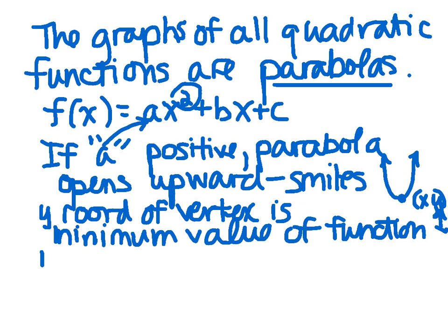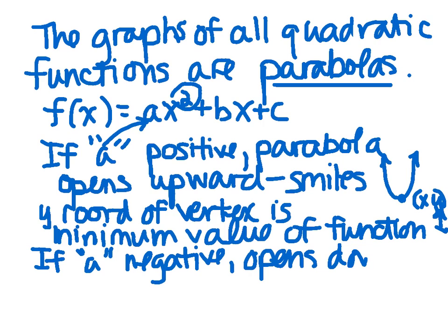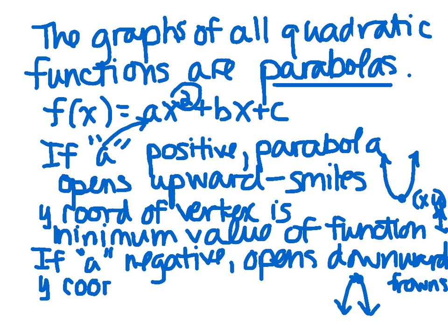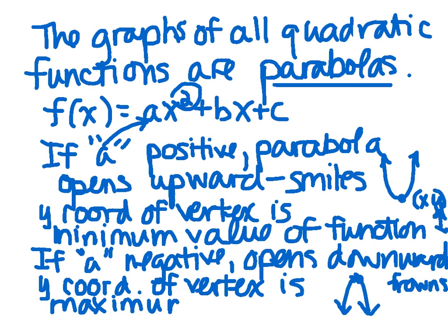Similarly, if a is negative, the parabola opens downward, looking like this. So as you can see, it's got a highest point. And so if a is negative, it frowns. And the y-coordinate of the vertex is the highest point or is a maximum value. When a is negative, there's a maximum value. When a is positive, there's a minimum value.